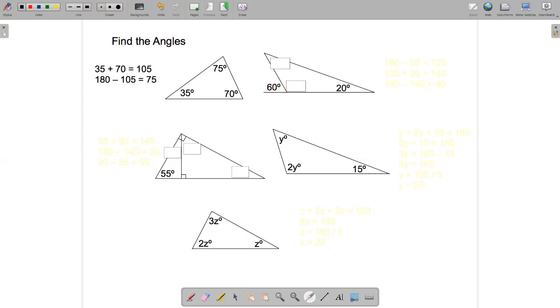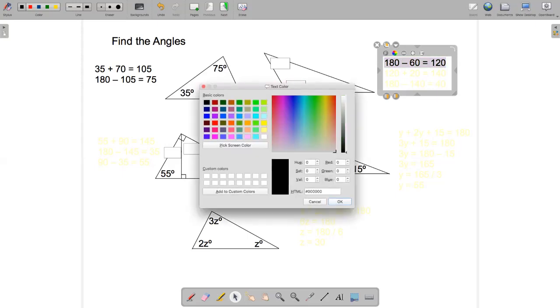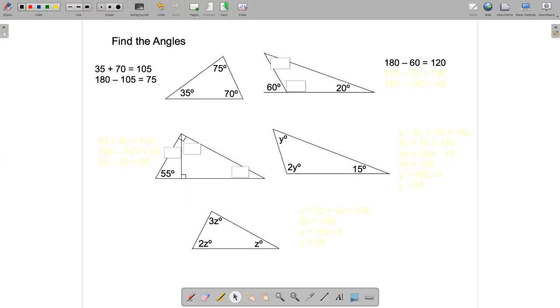Means these two angles will add to 180 degrees. So what I can do is I can subtract 60 from 180 to get 120. So this angle here is 120.